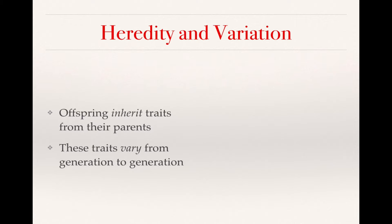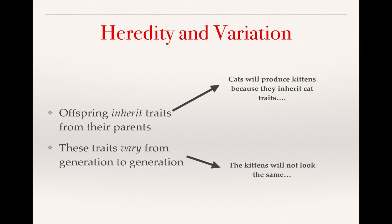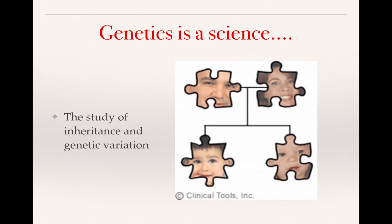Heredity and variation are two important topics. Offspring inherit traits from their parents — this is why cats produce kittens and dogs produce puppies. These traits vary from generation to generation, meaning kittens from one generation will look different from kittens in the next. You look different from your brother or your sister because of this variation. Genetics is a relatively new science in biology, only around since the early 19th century as a scientific way of looking at heredity.